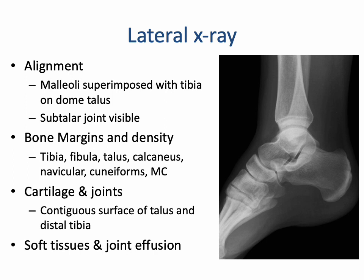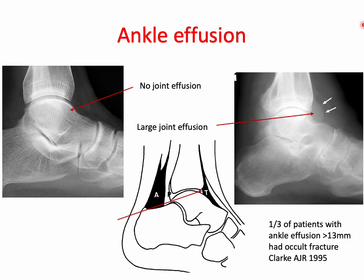On lateral plane films, you can see that the malleoli are superimposed on the talar dome, the subtalar joint is visible, and you can see the margins of most of the tarsal bones and the proximal metatarsal bones. You can also look for joint effusions, which appear as outward bulging of soft tissue density around the ankle joint. In the setting of trauma, a large ankle joint effusion should raise suspicion for a fracture.